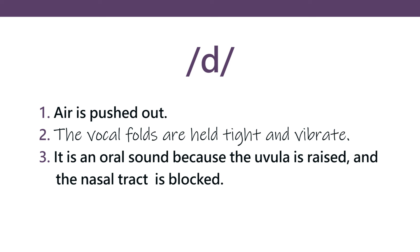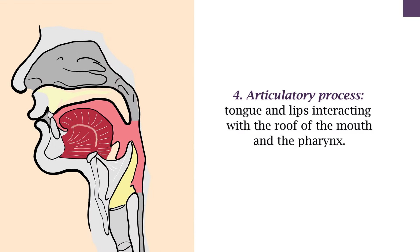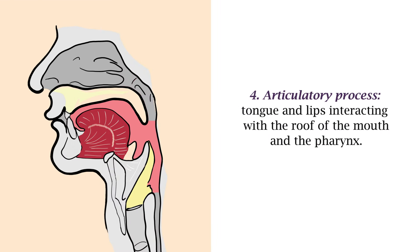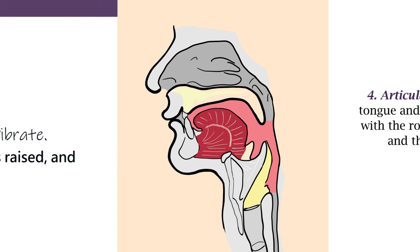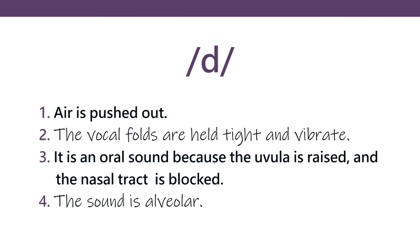The fourth and last step is the tongue and lips interacting with the roof of the mouth. For example, in the case of 'd', the tongue is raised to touch the alveolar ridge because it is an alveolar sound.